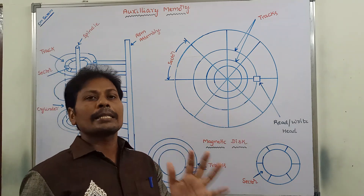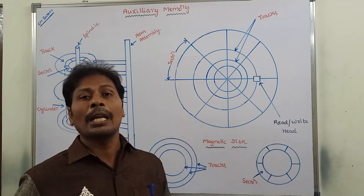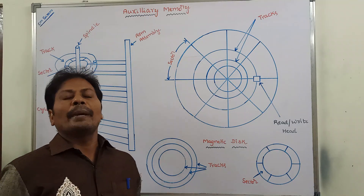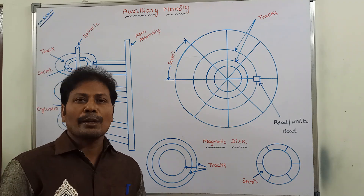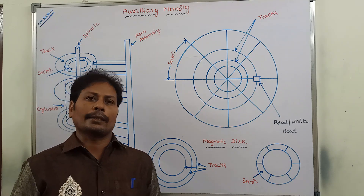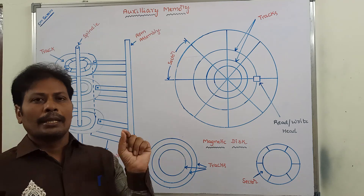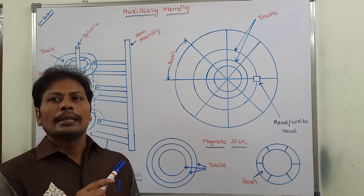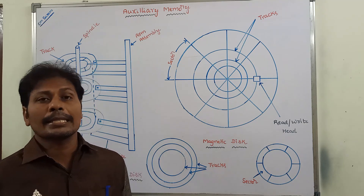A read-write head is available on each surface of the disc — that means a read-write head is available on each track. A disc system can be addressed using address bits that specify: the disc surface number, the disc number, the sector number, and the track within a given sector.